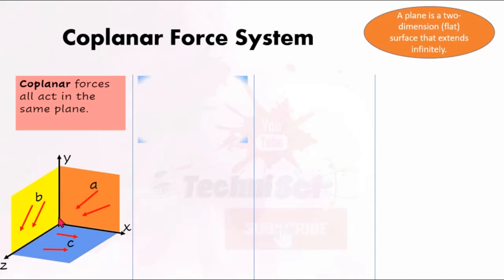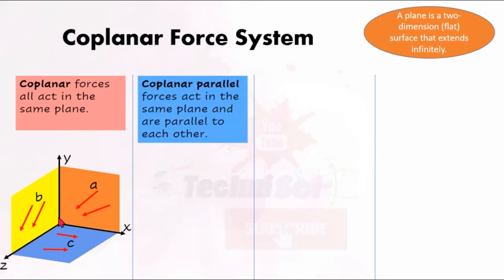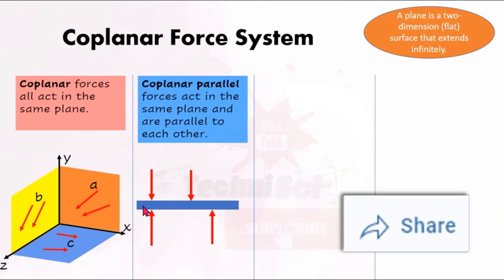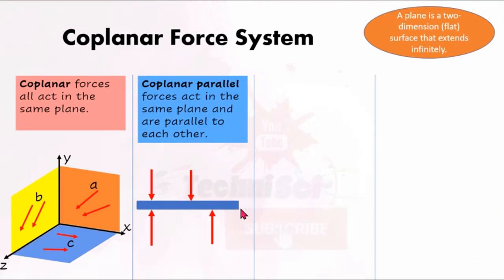The next type is coplanar parallel. For this force system, the forces act in the same plane and are parallel to each other. Using a familiar BMED example: a beam with forces acting on it — once those forces are coplanar and parallel to each other, we refer to them as a coplanar parallel force system.